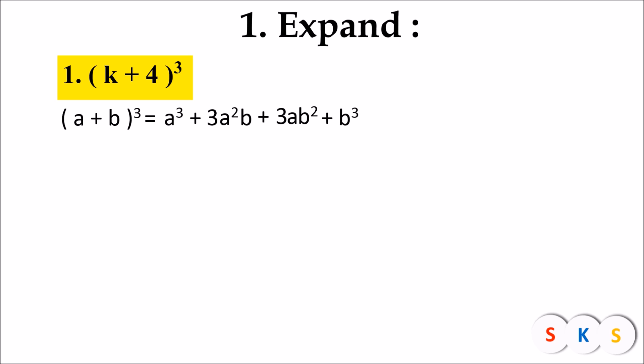The given question is (k + 4) the whole cube, which is in the form of (a + b)³, so we will use the (a + b)³ formula to expand it. The first term of the binomial is k, so we take a = k, and the second term is 4, so b = 4. We will substitute these values into the formula.